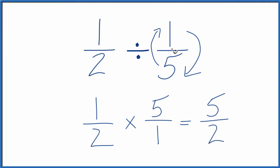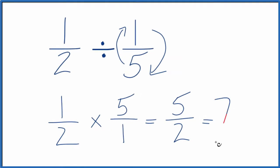So 1 half divided by 1 fifth equals 5 over 2. This is an improper fraction, so we could change this to a mixed fraction. We could say 2 goes into 5 two times with 1 left over, so we'll call it 2 and a half.